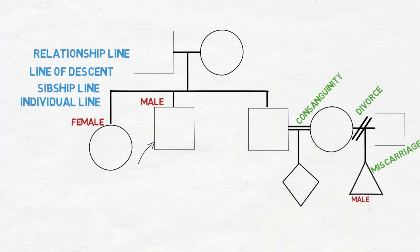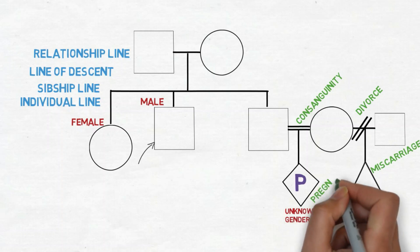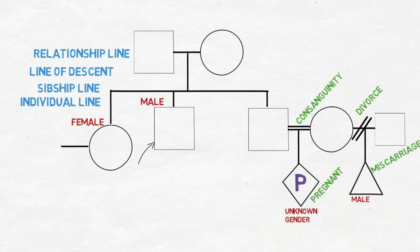A diamond represents an unknown gender. So you don't know the gender of the person. It can be an adult, it can be a child, whoever. But in this case P represents that the lady is pregnant and they don't know the gender yet.